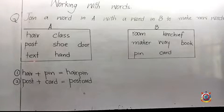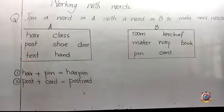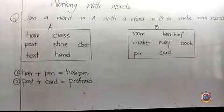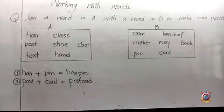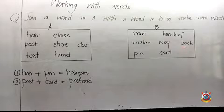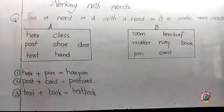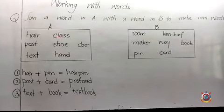The third word is 'text'. Text plus book makes 'textbook'. The fourth word is 'class'.